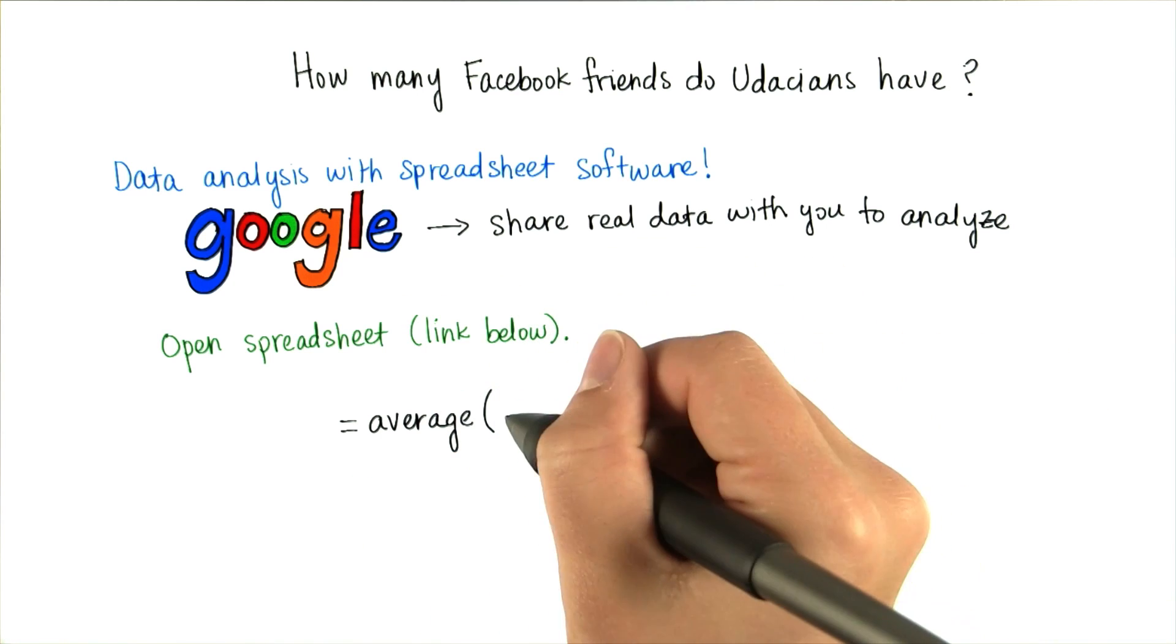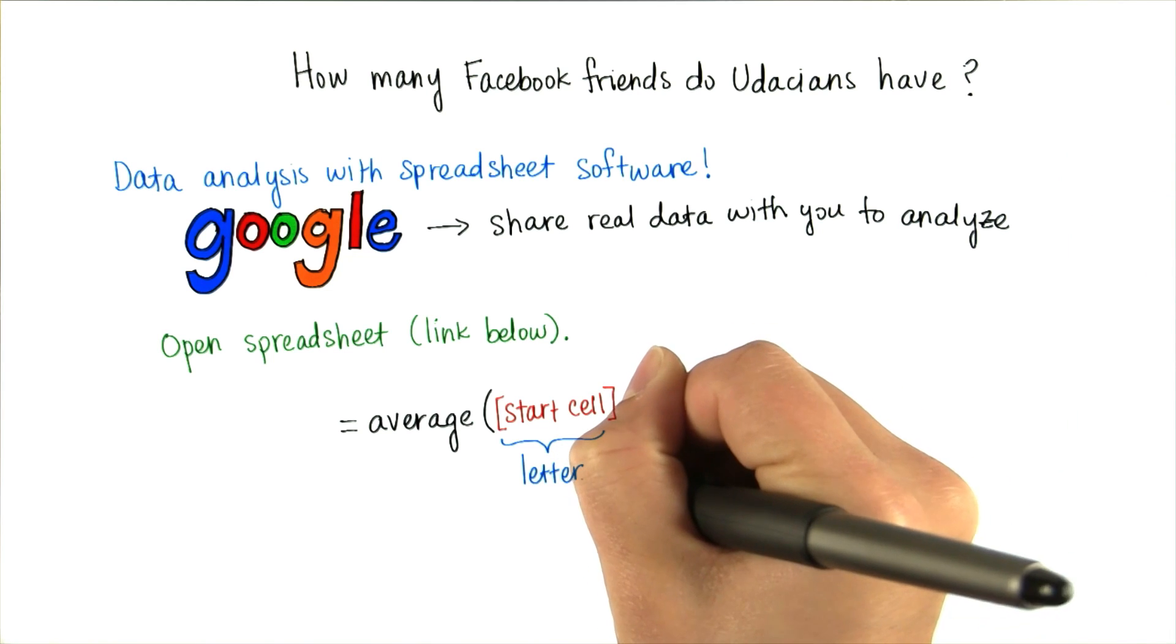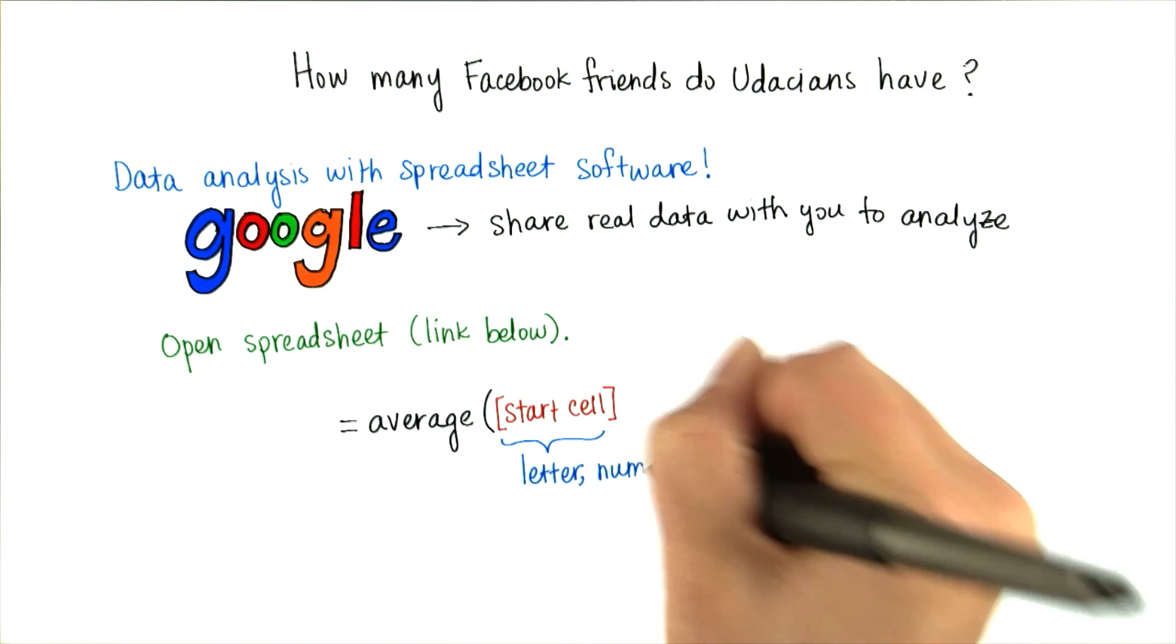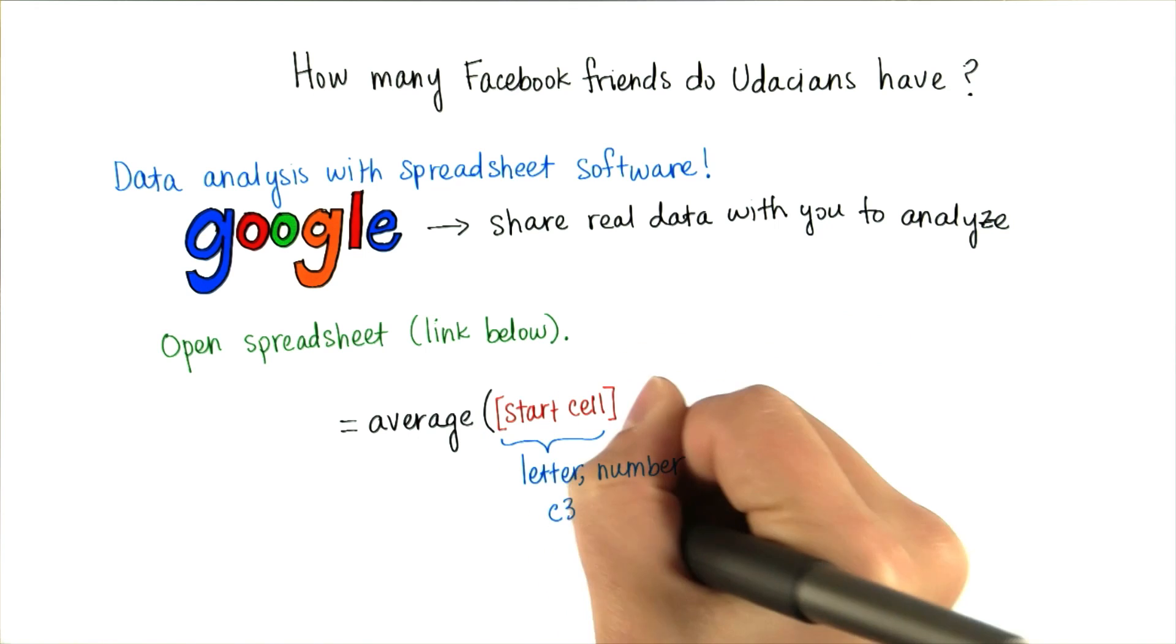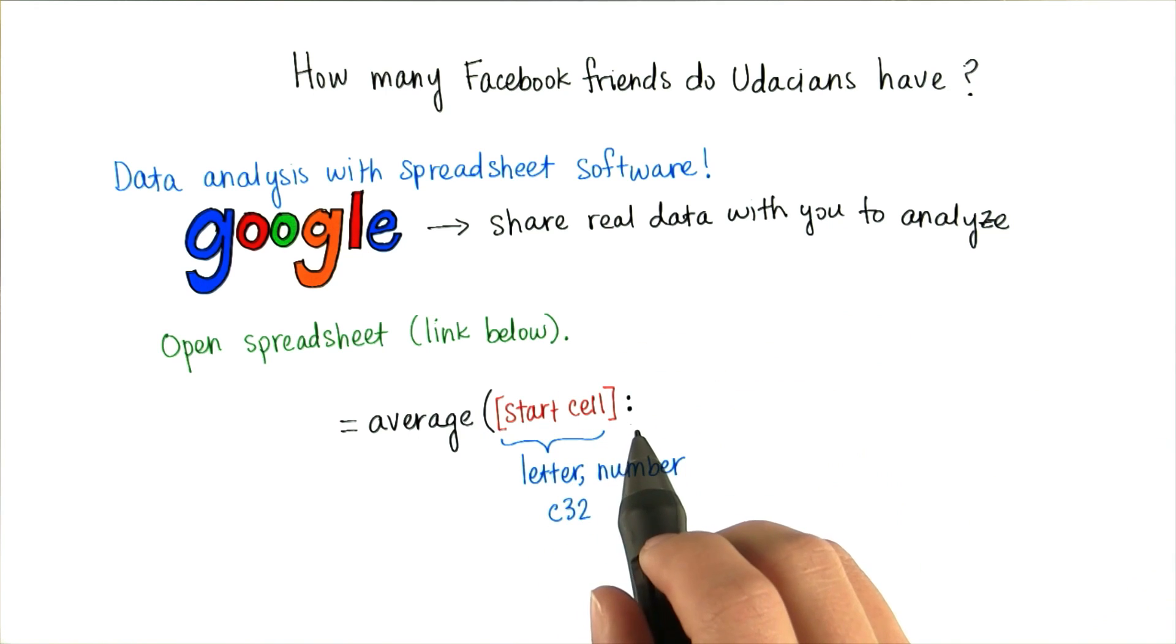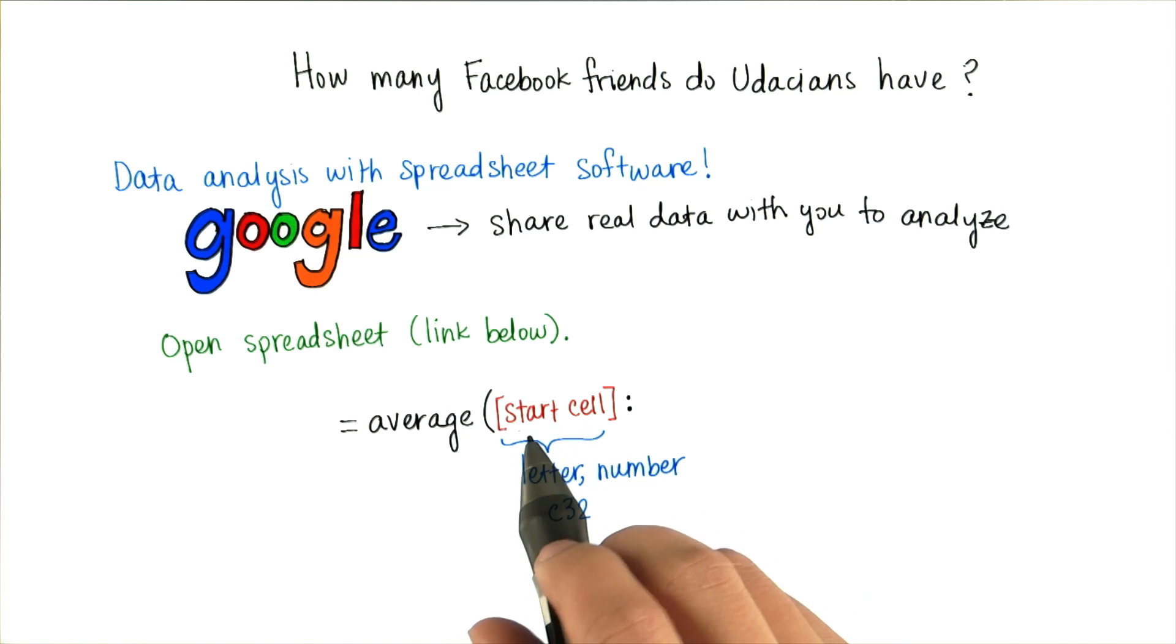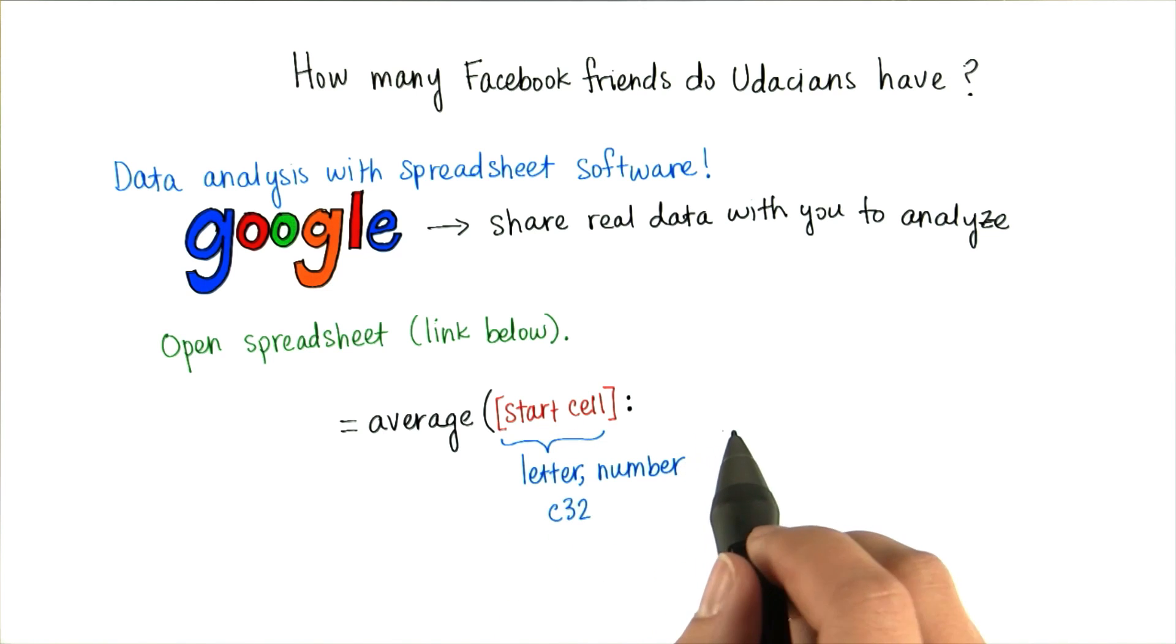Then in parentheses, write your start cell, which is the letter and then the number that corresponds to the location of that cell. For example, C32. Then you'll put a colon, because you want to include all the cells in between the start cell and the end cell.